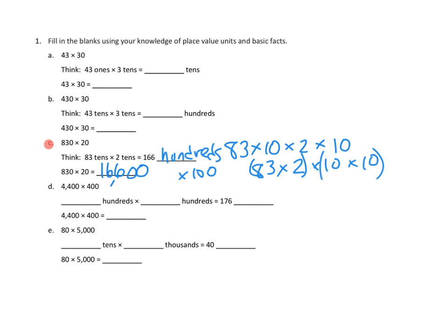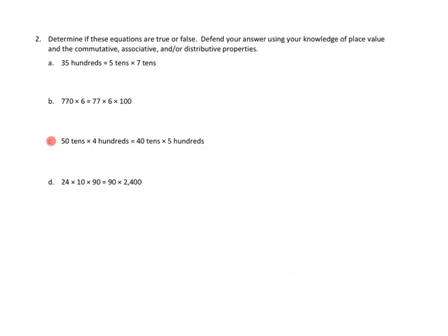Let's take a look at one more problem. Maybe we'll do two more problems tonight. Problem number two asks us to determine if these equations are true or false. Defend your answer using your knowledge of place value and the commutative, associative and or distributive properties. And I chose a particularly challenging problem, which is 2c. 50 tens times 4 hundreds equals 4 tens times 5 hundreds. Now this is a weird one, huh?